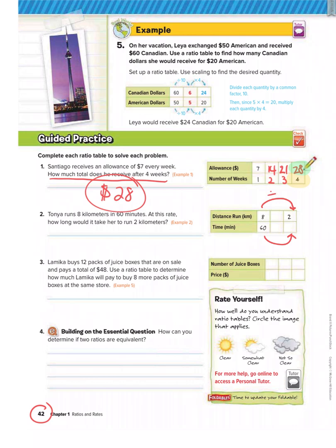So I know 8 can be divided by 4 to get to 2. So I can do the same thing to the 60 to keep it equivalent. So 60, we would also divide by 4, and that gives us 15. So as long as we do the same multiplication or division on the top and bottom, we'll end up with an equivalent ratio. So for 2 kilometers, it would take her 15 minutes.